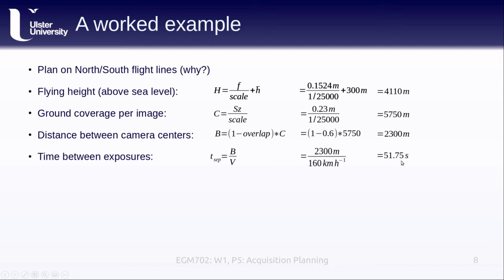Modern camera systems can probably handle a separation that is a fraction of a second. You may have to round up or down depending on your system. In this case, we're going to round down, which now means that we have to recalculate the distance between our camera centers. We're rounding down to 51 seconds, which gives us a new distance between camera centers of 2,267 meters.